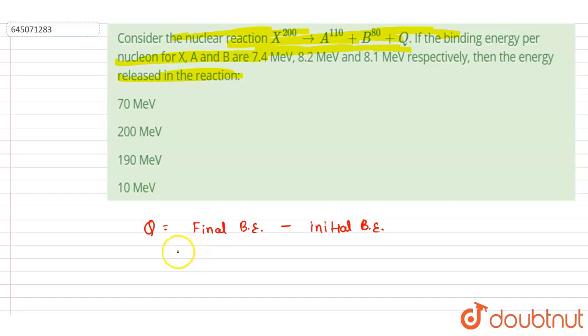The binding energy for A is 110 into 8.2. For B, if you see, it is 80 into 8.1.